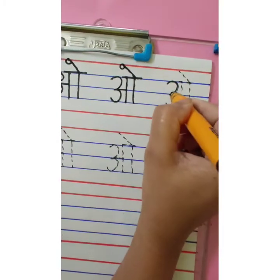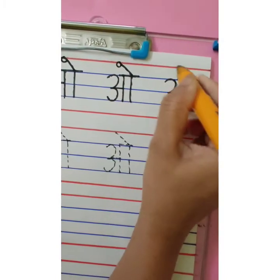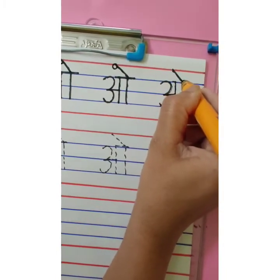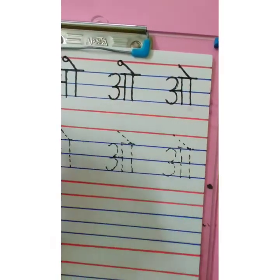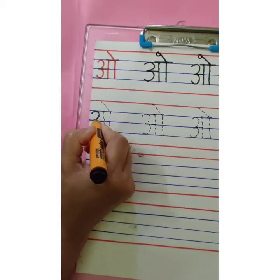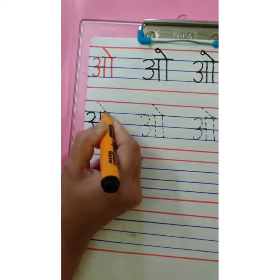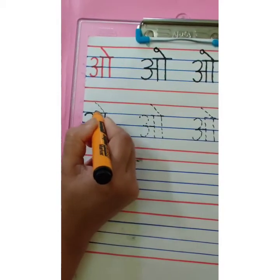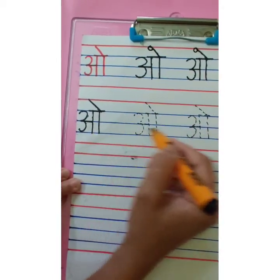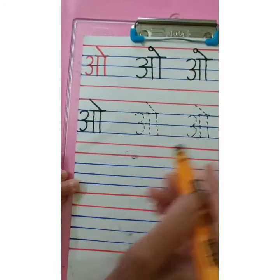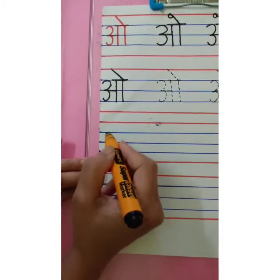Number 3, sleeping line, standing line, one more standing line and slanting line overhead, a small sleeping line overhead — this is O. Number 3, sleeping line, standing line, one more standing line, overhead sleeping line and matra. O. This way you are going to complete these two rows and then remaining rows you are going to write independently.